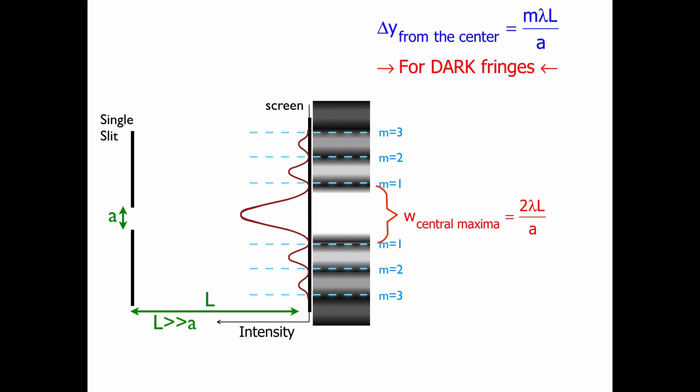Now one final little piece about this. The delta Y between the fringes, between M1 and M2, between M2 and M3, and M3 and M4, is just lambda L over A, where lambda is the wavelength, L is the length of the screen, and A is the aperture's opening. And all that's measured from the center of the aperture, which is the center of the central maxima.